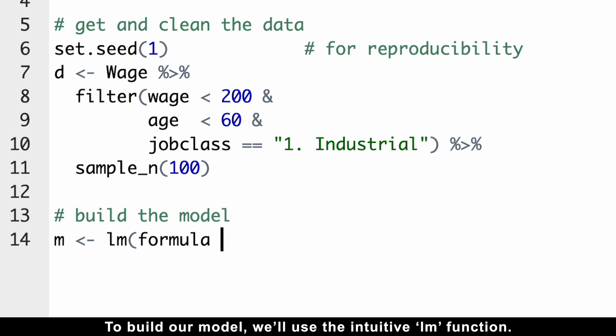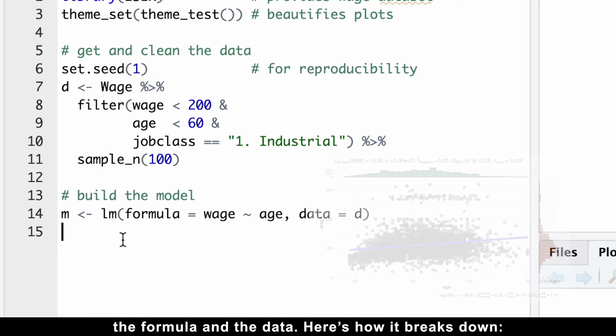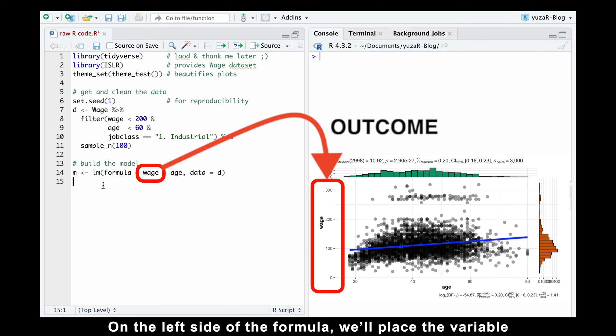To build our model, we'll use the intuitive lm function. Within lm, we only need two arguments: the formula and the data. Here is how it breaks down. On the left side of the formula, we'll place the variable we are interested in predicting.